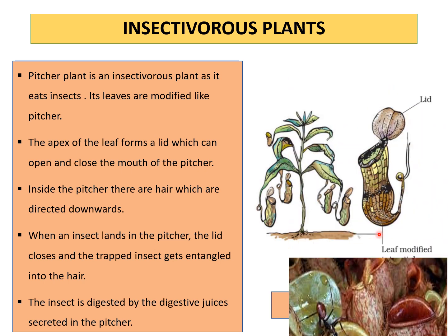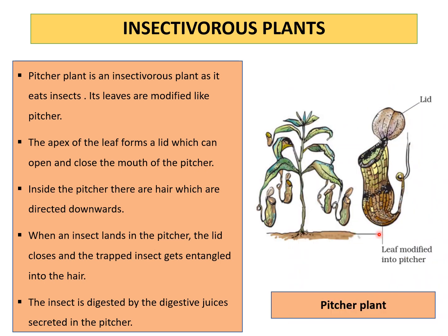But why do these plants eat insects? Because these plants mainly grow in nitrogen-deficient soils. In order to overcome the deficiency of nitrogen, they eat insects.